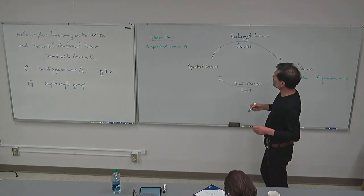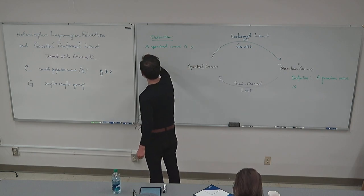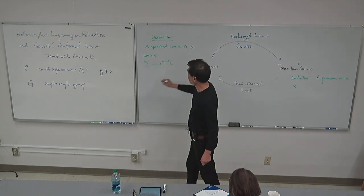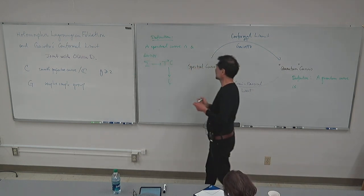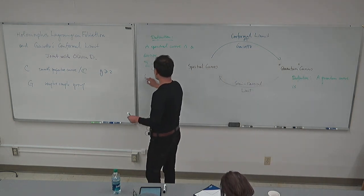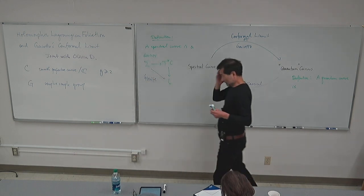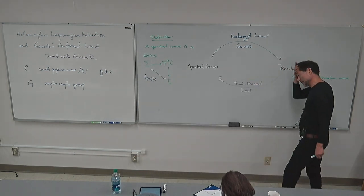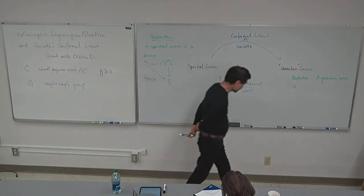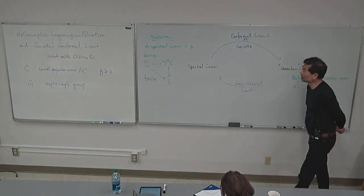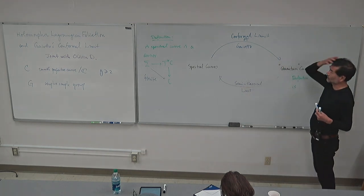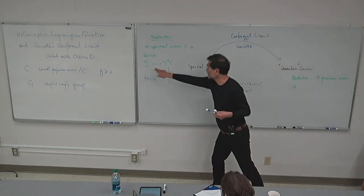A definition: a spectral curve is a divisor sigma inside the cotangent bundle of this curve C, meaning this is a cotangent fibration, in such a way that the induced map here is finite. I am not assuming sigma to be non-singular, not even irreducible, and not even reduced. So sigma can be very bad from the point of view of the topological recursion business. But that's the definition — it's just a divisor which is finite over C.